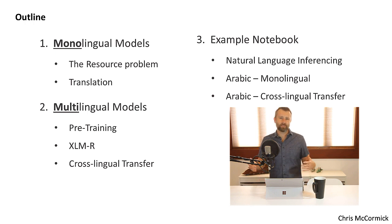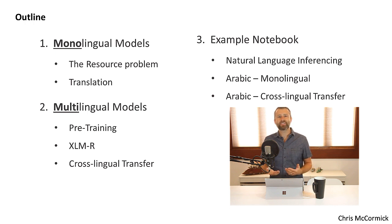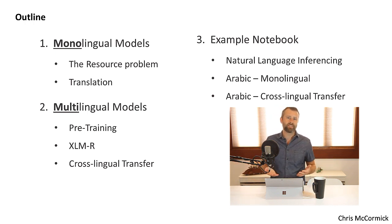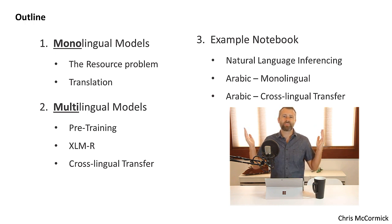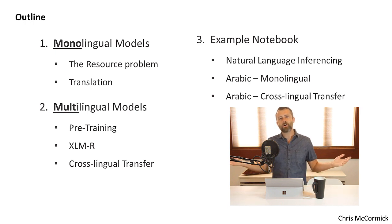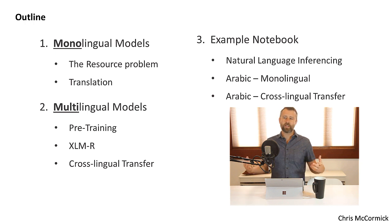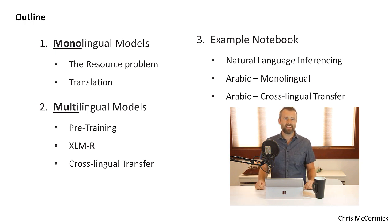Instead of just pre-training BERT on English text, we pre-train it on text from like a hundred different languages — basically as many languages as we can get a substantial amount of text for. And we just feed it all into BERT as if it were all English. We don't differentiate between the languages. It's as if we all spoke a single language that just happens to have a very large character set, a very large vocabulary, and a lot of different ways of saying the same thing.